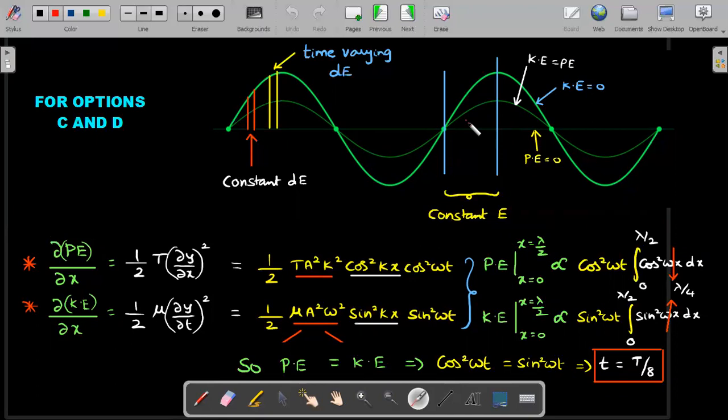Here and here in this entire lambda by four structure, energies are equal but contributions are different. Here contribution is PE form, here it's KE form. In between, there's some position where KE and PE contributions are equal. Also, constant E appears between zero and lambda by four; constant dE appears only at lambda by eight.